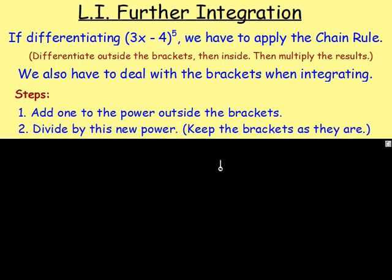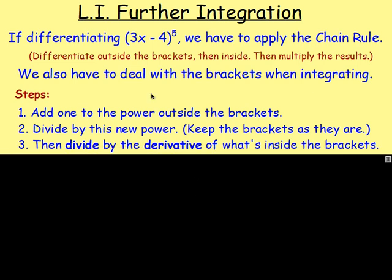Step 2, you divide by this new power, keeping the brackets just as they are. So after we've increased the power to a 6, we'd have (3x − 4)^6 and then divide by 6. We then look at what's inside the brackets and differentiate what is inside — just the same way you would with the chain rule. So if you differentiate that, you would just get 3. When you're integrating, instead you divide by the derivative.